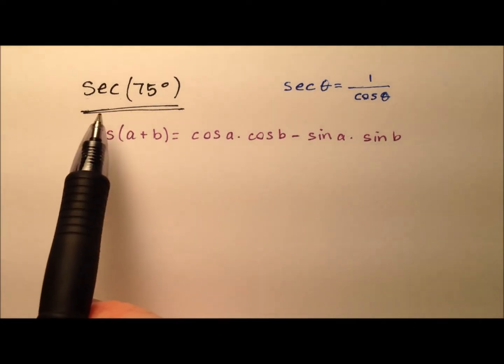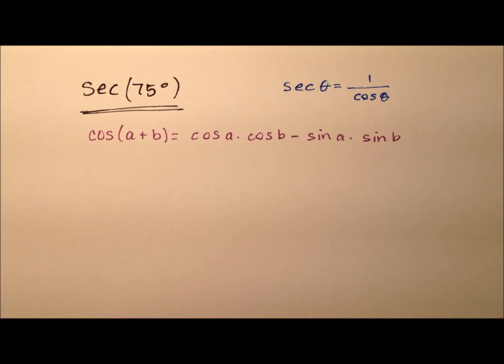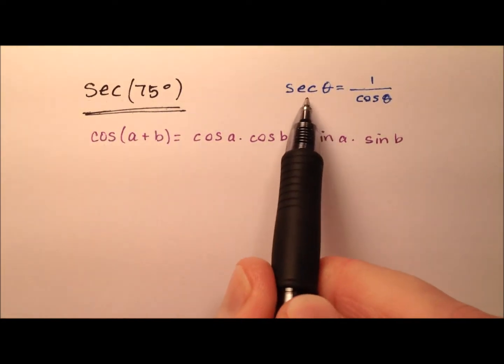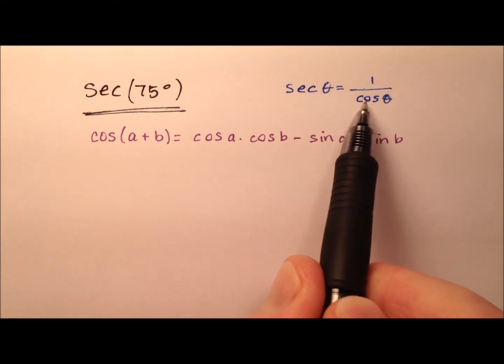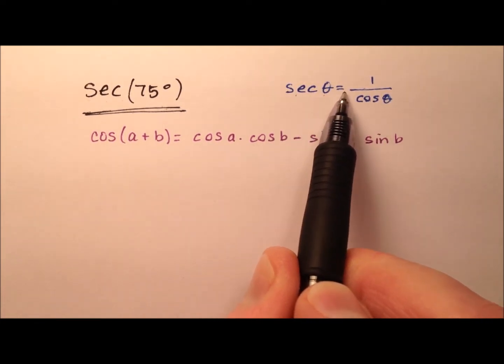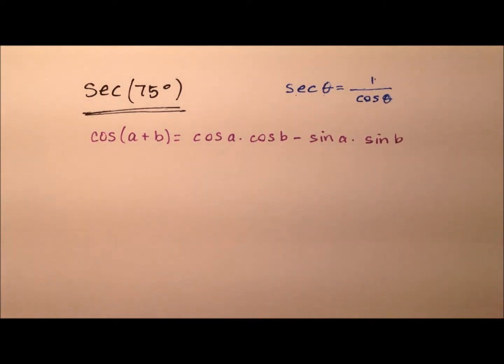In this example, I'm going to work out the exact value for the secant of 75 degrees. First, let's recall that secant is a reciprocal function with cosine, so the secant of some angle theta is equivalent to 1 over the cosine of that same angle theta.